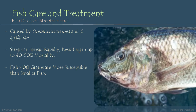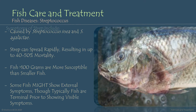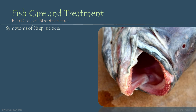One of the things that makes Streptococcus a really difficult disease to identify quickly and address in a timely manner is the fact that some fish might show external symptoms, though typically fish are terminal prior to showing visible symptoms. So it's not uncommon to start to see fish loss, and then as the Streptococcus infection progresses through your fish population, start to notice a few individuals showing visible signs that will allow you to recognize what it is and treat for it. That does make dealing with a Streptococcus infection in an aquaponics system pretty difficult.